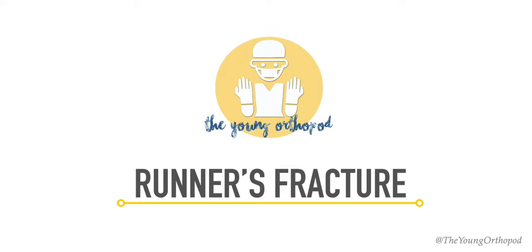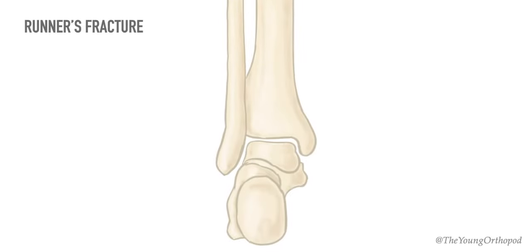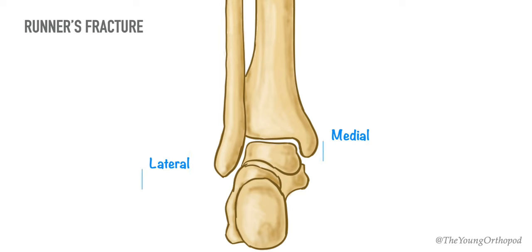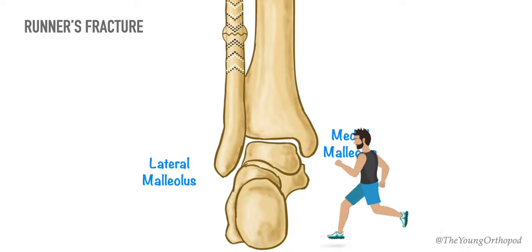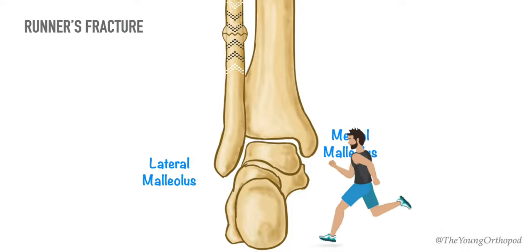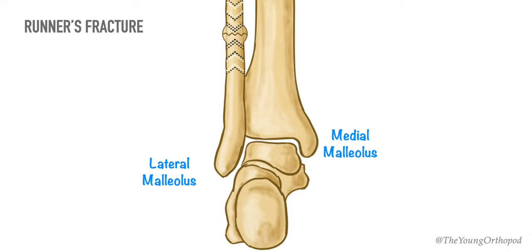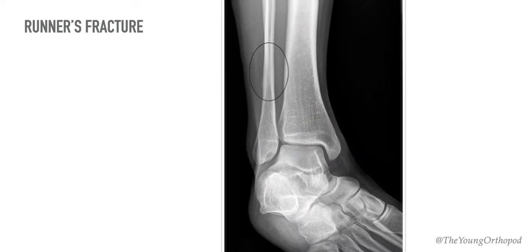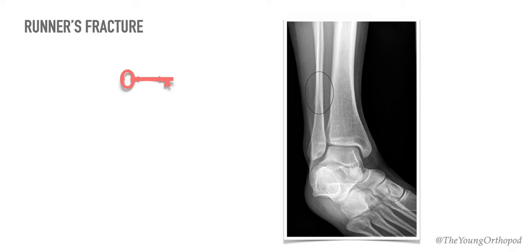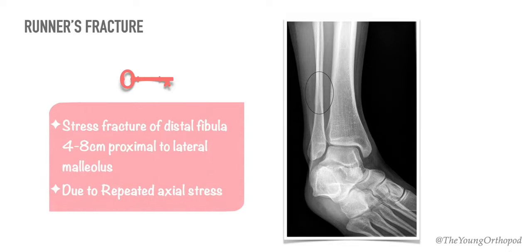Runner's fracture is a stress fracture of the distal fibula, about 3 to 8 cm above the lateral malleolus. The mechanism of injury is repeated axial stress on the fibula, seen most commonly in athletes — especially runners — and non-athletes who suddenly increase their activity levels, hence the name runner's fracture. On a plain radiograph, sclerosis and periosteal or endosteal changes may be seen in the fibula after 2 to 3 weeks of onset of symptoms.